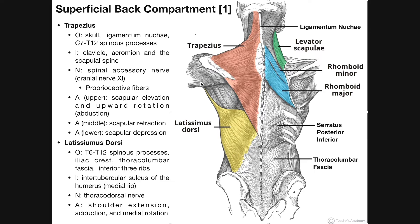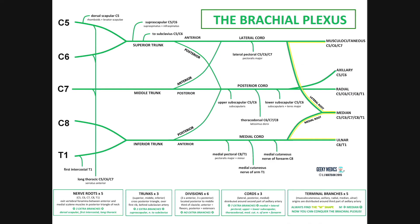Because latissimus dorsi inserts on the humerus, it produces movements of the shoulder joint. The three major movements facilitated by latissimus dorsi are shoulder extension, shoulder adduction, and medial rotation of the shoulder joint. Latissimus dorsi is innervated by the thoracodorsal nerve, which comes off the posterior cord of the brachial plexus. The posterior cord originates from posterior contributions of the superior, middle, and inferior trunks. The thoracodorsal nerve is mainly supplied by ventral rami C6, C7, and C8.